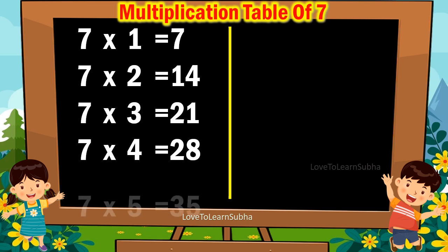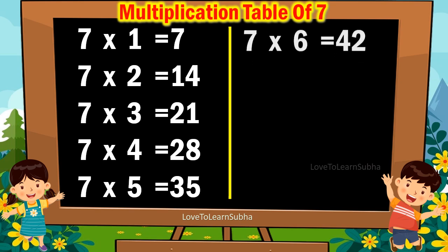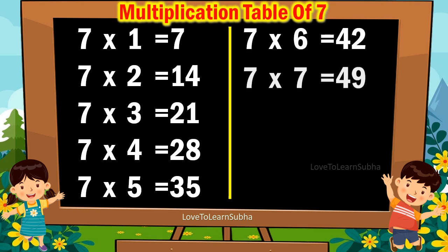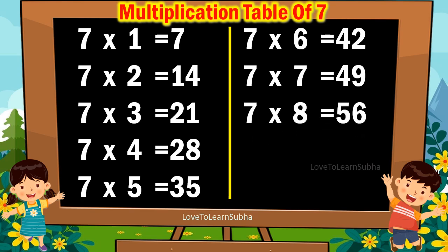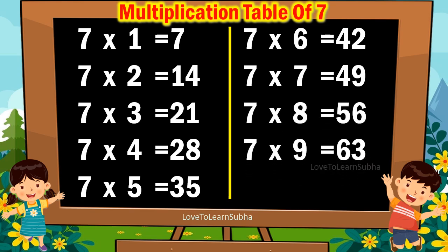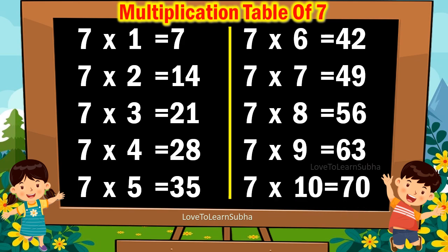7 5s are 35. 7 6s are 42. 7 7s are 49. 7 8s are 56. 7 9s are 63. 7 10s are 70.